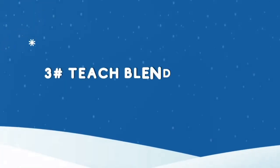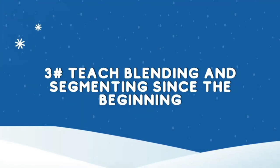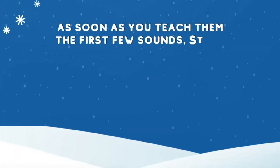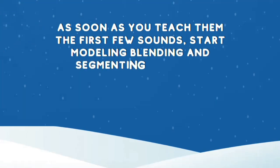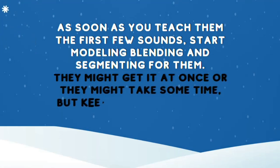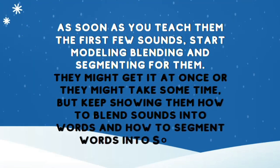The third point to remember is teach blending and segmenting since the beginning. This is another mistake that we often make — we keep teaching children the sounds from A to Z and we don't teach them blending until the letter sounds are finished. You are not supposed to do this. As soon as you teach them the first few sounds, start modeling blending and segmenting for them. They might get it at once or they might take some time, but keep showing them how to blend sounds into words and how to segment words into sounds. Keeping these three points in mind, let's start with our first day Jolly Phonics lesson plan.